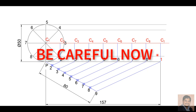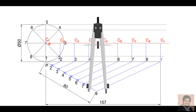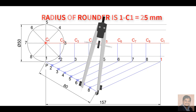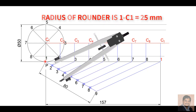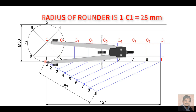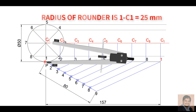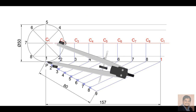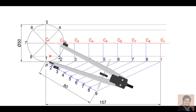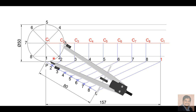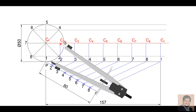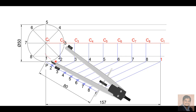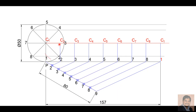Now the important part — how to draw the cycloid. Take a compass and set C1 as the center with a radius of 25 mm (that is C1 to point 1). Now take center C2 and draw an arc on the horizontal line of point 2. On this line, with the same radius of 25 mm, draw one arc on the left side. The radius of the arc will be 25 mm.